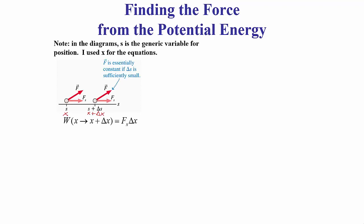Here I have an object moving in one dimension. In the diagram they're using s for the position variable, but in the equations I'm using x, so it's moving along the x-axis. It moves from a position x to position x plus delta x. The work done by the force is the parallel component of the force along the x-axis, f sub x, multiplied by the distance. If delta x is small enough we can treat the force as being approximately constant, so the work done is approximately that constant force times that distance.